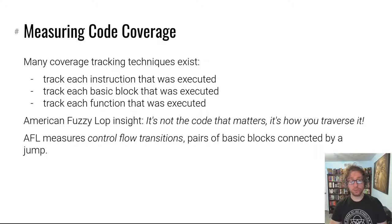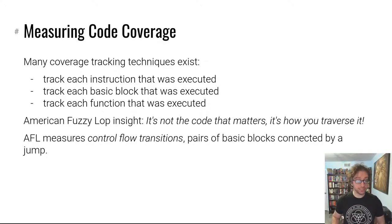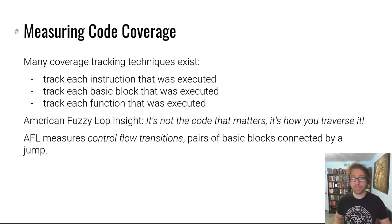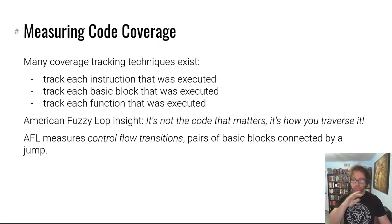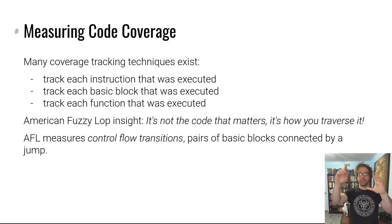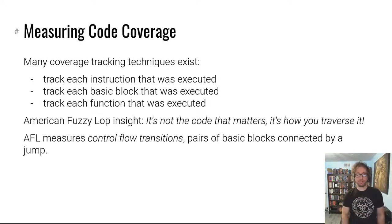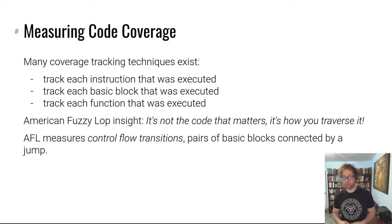Moving on to measuring code coverage: how do you measure if you've triggered extra coverage? There are many techniques and philosophies. You might track every instruction executed, or every basic block executed. What AFL does is rely on the insight that it's not necessarily what code you trigger that matters — it's how you traverse that code. You might have the same function and if you go through basic blocks in a given order, it might have different behavior than going through the same blocks in a different order. So AFL measures control flow transitions — pairs of basic blocks connected by jumps — and that's how it measures code coverage.